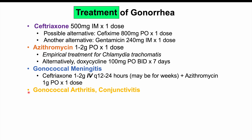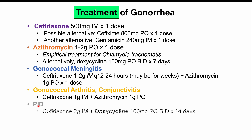For gonococcal arthritis and conjunctivitis, treatment is ceftriaxone 1 gram IM plus azithromycin 1 gram PO. For pelvic inflammatory disease, ceftriaxone 2 grams IM is used along with doxycycline 100 mg PO BID for 14 days — a longer course — and metronidazole may be added depending on the organisms involved.